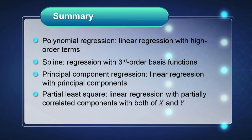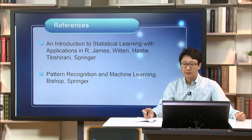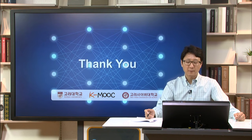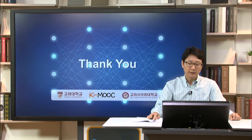Here is the summary. Polynomial regression is a linear regression with high order terms. Spline is a regression with third order basis functions by binning the whole x range. Principal component regression is a linear regression with the first few principal components. And partial least square is a linear regression with components that are partially correlated with both x and y. Here are some references you may want to see for more details. Thank you very much.